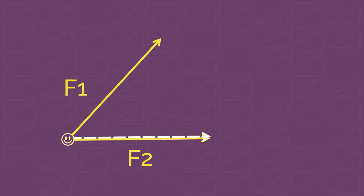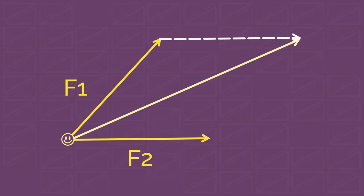We do that by moving F2 in such a way that its tail becomes attached to the head of F1. Then we connect the tail of F1 and the head of F2. The vector formed is the sum of F1 and F2.